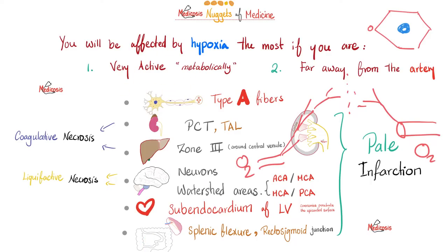In the gut, the splenic flexure is most vulnerable because it lies between two major arteries: the superior mesenteric artery and the inferior mesenteric artery. Think of it as a watershed area of the colon. The rectosigmoid is also vulnerable for the same reason.